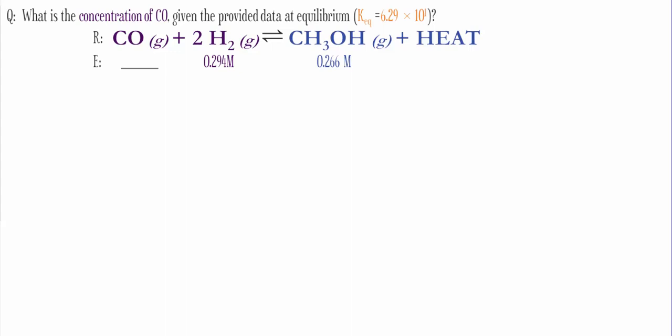What is the concentration of carbon monoxide given the provided data at equilibrium? Keq is 6.29 times 10 to the first power.